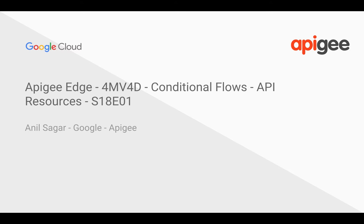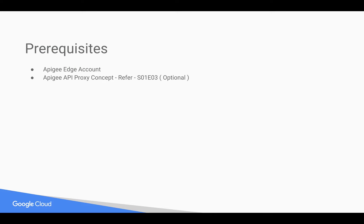Hey everyone, in this four-minute video for developers we're going to see how Apigee conditional flows work, which is very important when it comes to designing your APIs. In this example we are going to see how to define conditional flows to handle different API resources. Prerequisites for this video: you need an Apigee Edge account — you can sign up at apigee.com — and basic concepts of Apigee API proxy, for which you can refer to earlier four-minute videos.